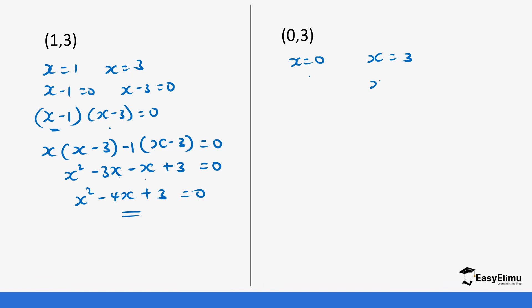And then x minus 3 equals 0. Since x equals 0, it's like x times (x minus 3) equals 0.